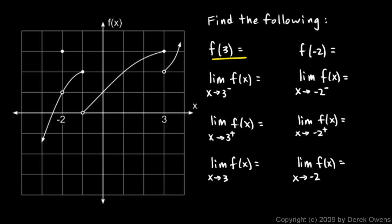First, f(3) — the value of the function at x = 3. At x = 3, we take note of the fact that we have a closed circle right there. So the open circle doesn't matter. It's the closed point at x = 3 that corresponds to a y-value of 3. So f(3) = 3.